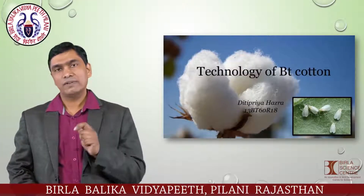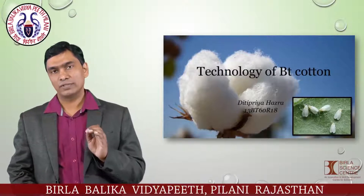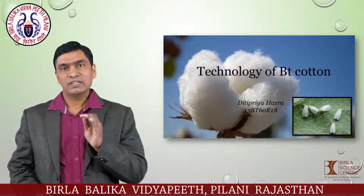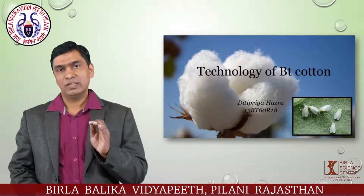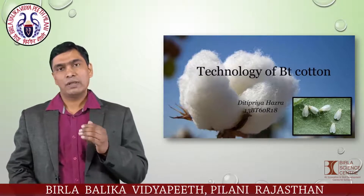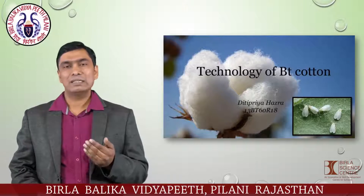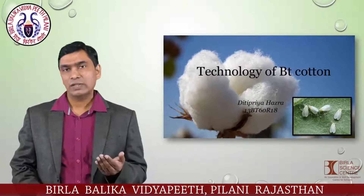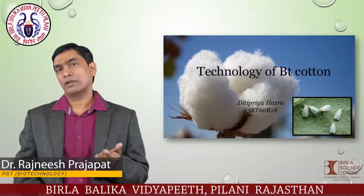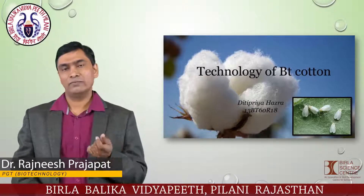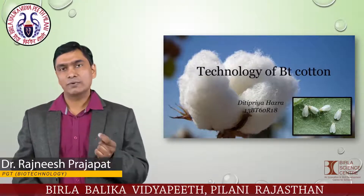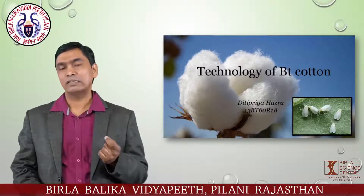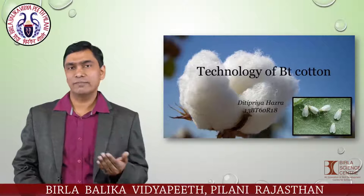In Bt cotton, we have inserted one gene from a prokaryotic system — that is Bacillus thuringiensis — into the eukaryotic genome of cotton. By this, the plant gets insect-resistant properties. Insects will come and eat different parts of the plant like leaf, fruit, etc., and the Bt toxic protein gets exposed in their intestine, making small cuts.